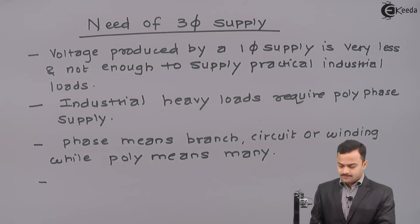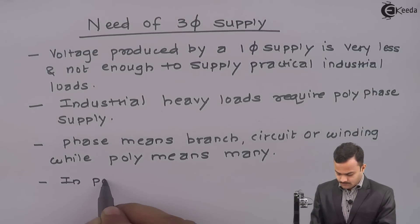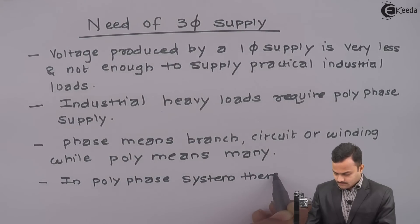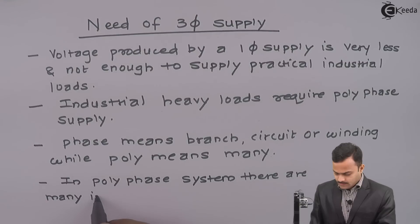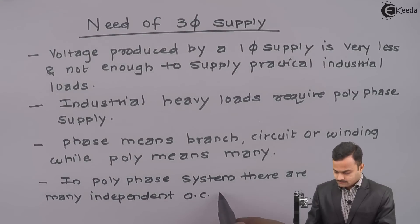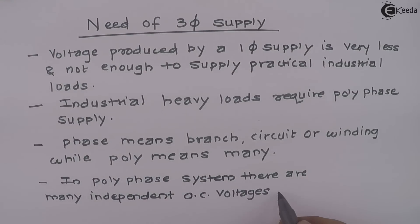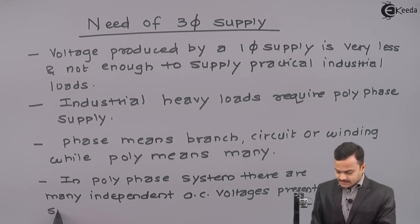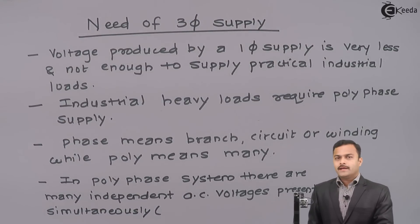So, what is there in a polyphase system? In polyphase system, there are many independent AC voltages present simultaneously. How many? That depends upon number of phases.